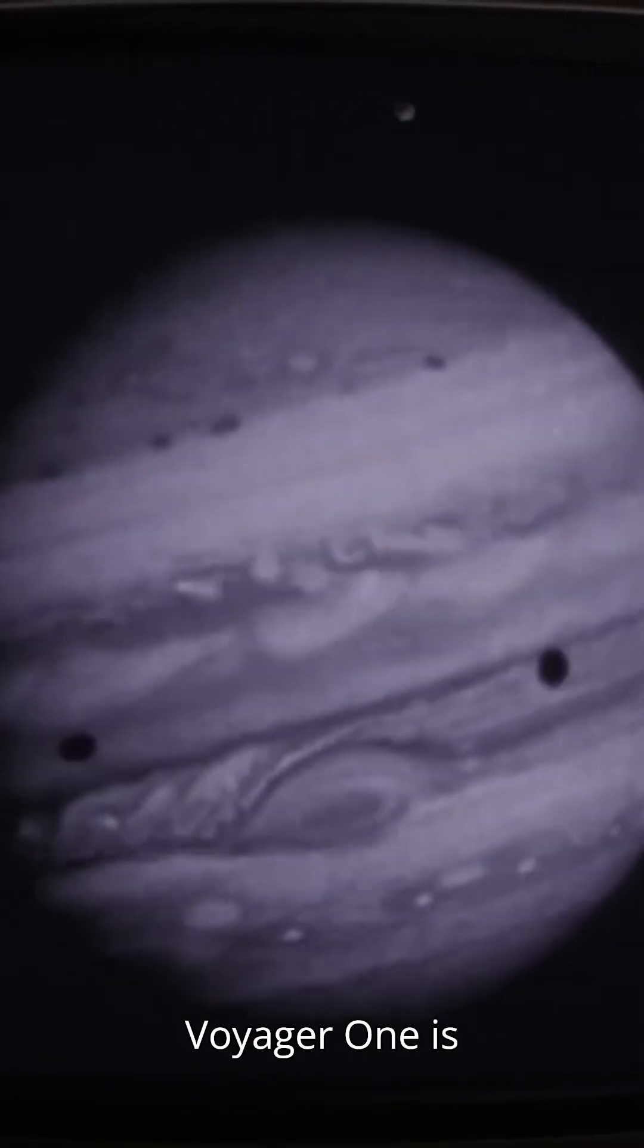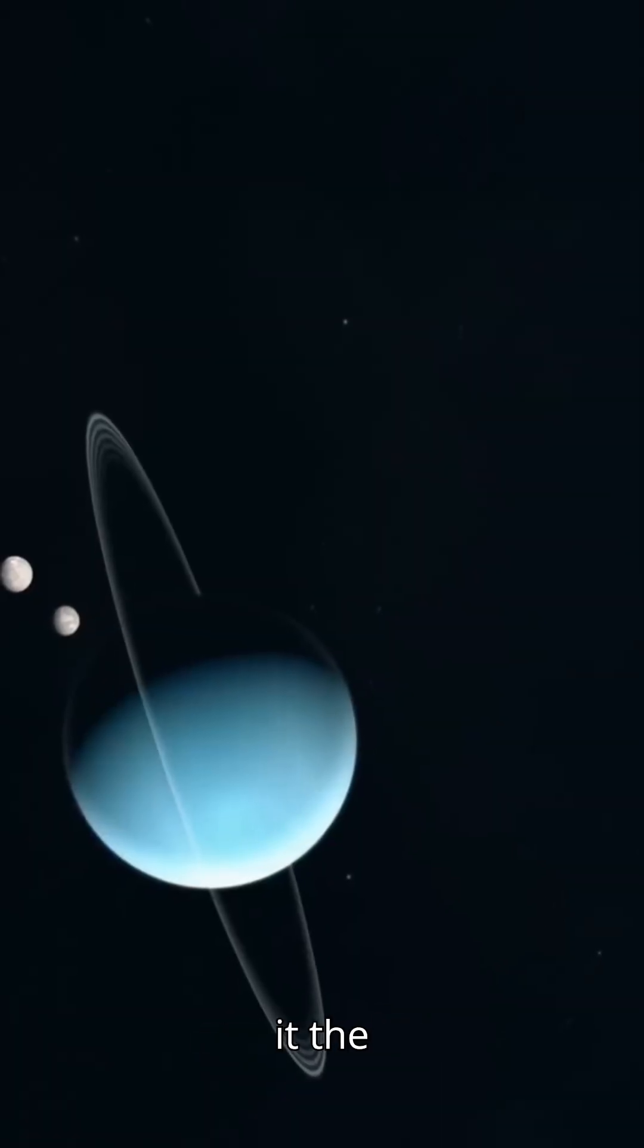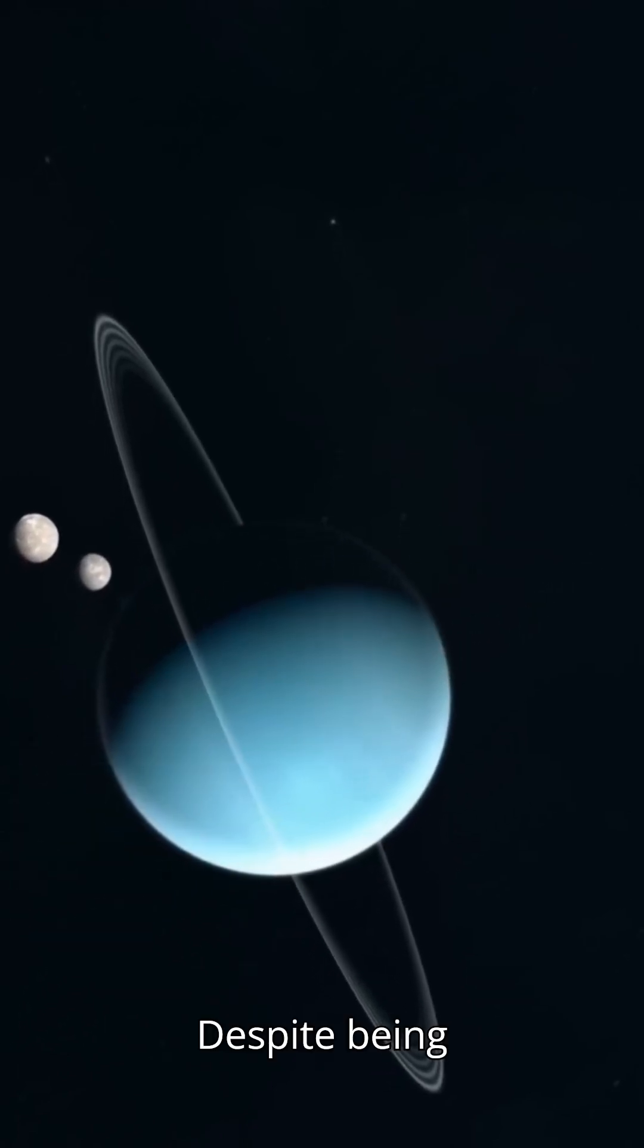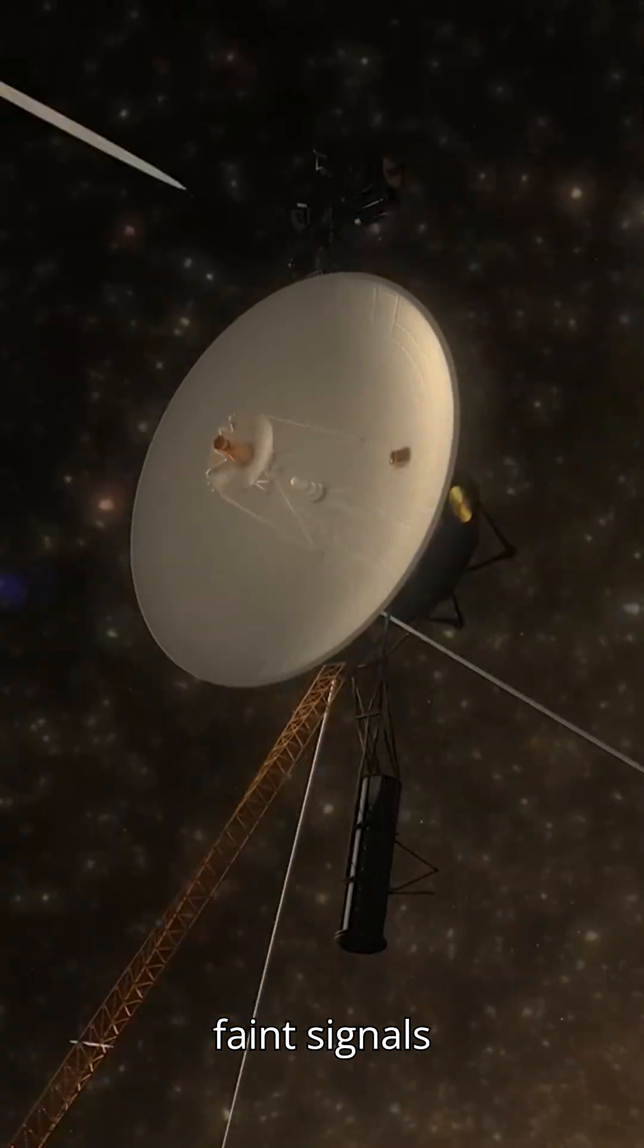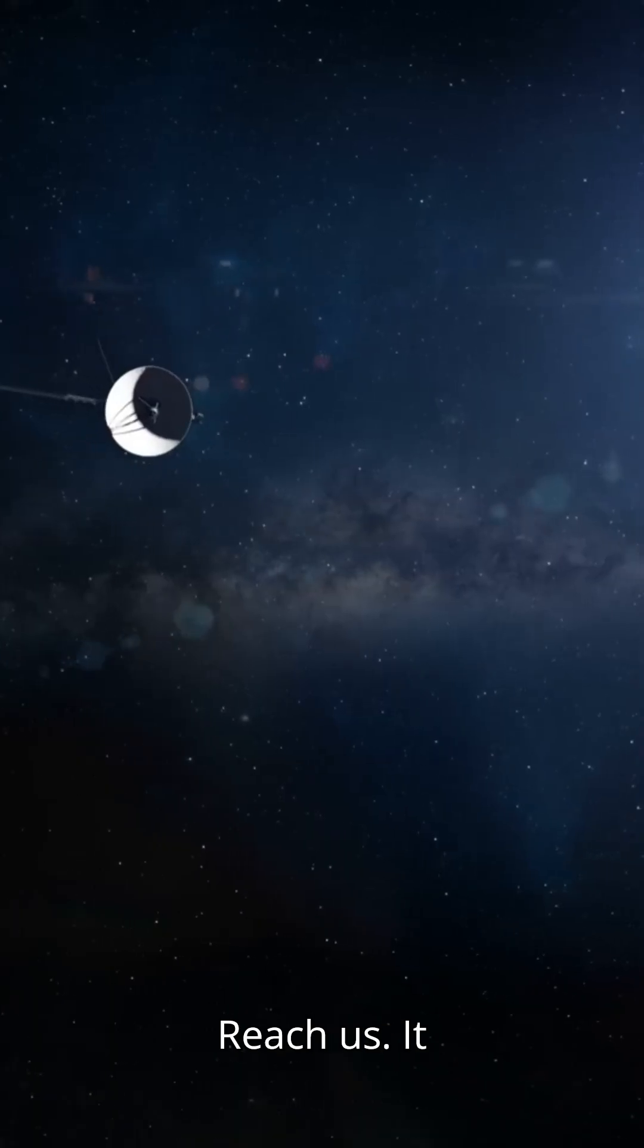Today, Voyager 1 is over 24 billion kilometers away, making it the farthest human-made object in history. But here's where it gets mysterious. Despite being launched almost 50 years ago, it still whispers faint signals back to Earth. Signals that take more than 22 hours to reach us.